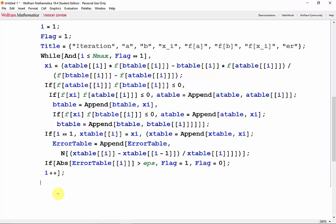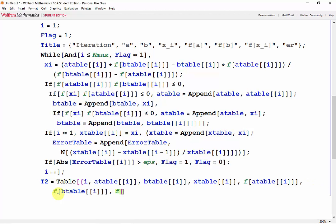The Table function puts together all of the vectors the while loop created: i, atable[i], btable[i], xtable[i], then we have f(atable[i]), f(btable[i]), and f(xtable[i]), and finally we have our ErrorTable.